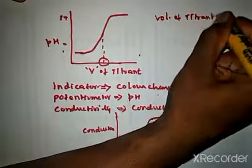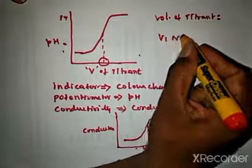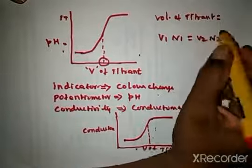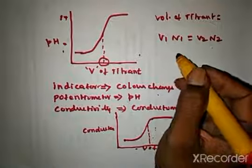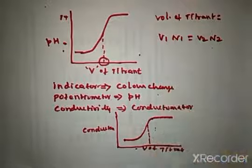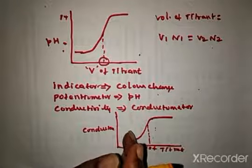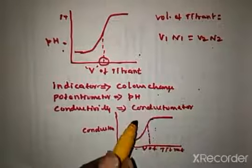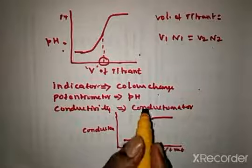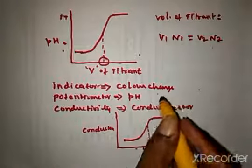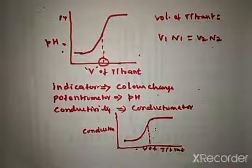Once we know the volume of the titrant, we apply the volumetric principle V1N1 = V2N2 to calculate the normality of the unknown solution. The principle of acid-base titration is that the volume of titrant needed for the unknown solution may be measured by using an indicator, through the change in pH, or through the change in conductivity by conductometry.